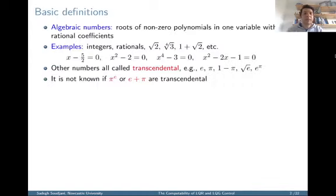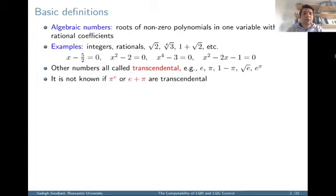I start with some basic definitions which might be new for the audience in the control community. The first is the difference between algebraic numbers and transcendental numbers. Algebraic numbers are roots of polynomials in one variable with rational coefficients. Examples include integers, rationals, square root of 2, the fourth root of 3, 1 plus square root of 2, and so on. We can easily write down a polynomial with rational coefficients whose roots are those numbers.